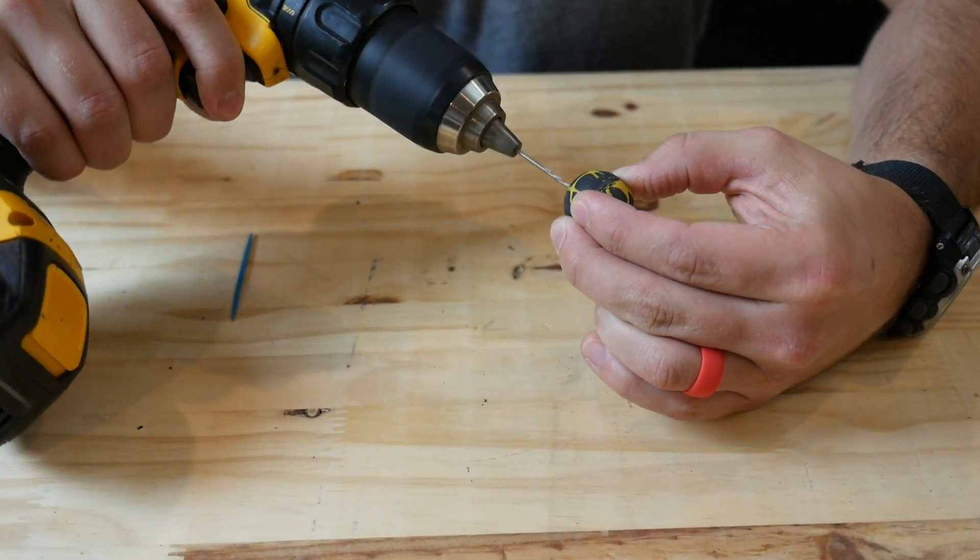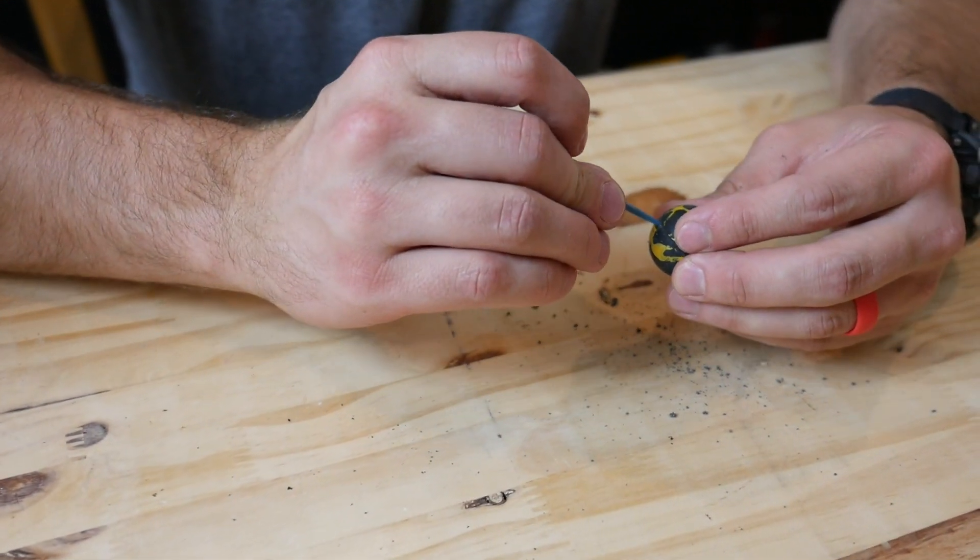For our first DIY top, all we did is we took our little rubber bouncy ball that you'd get from a quarter machine, drilled a hole in it, and then stuck a toothpick through the hole.